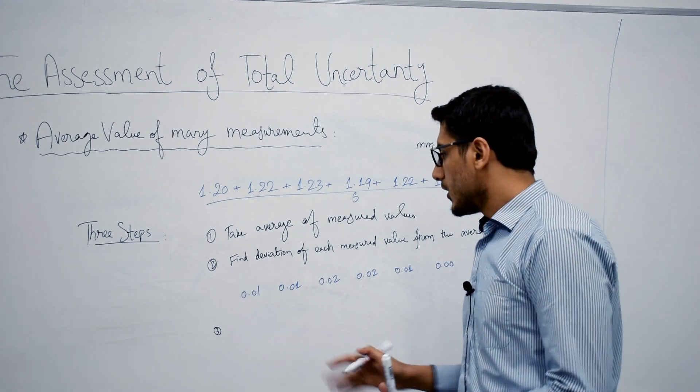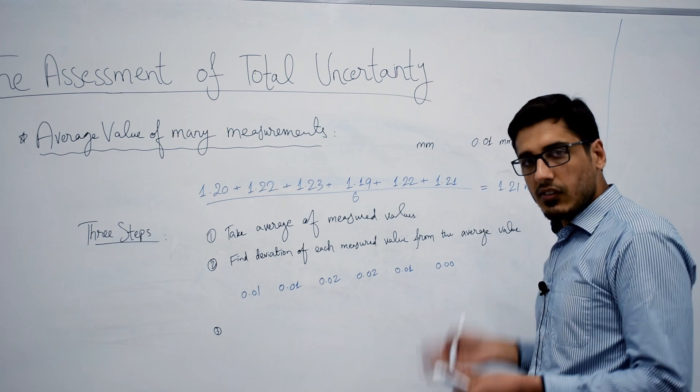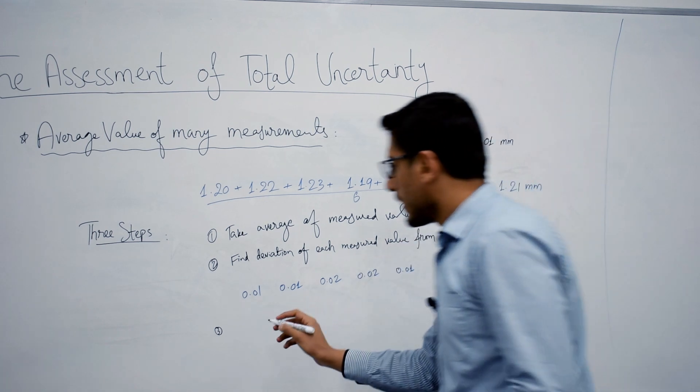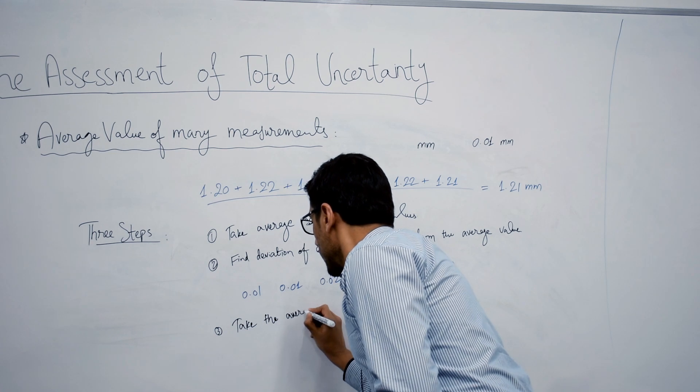Now the third step is that you need to take the average of these deviations, and the result that you get will be your uncertainty in the final result. So the third step is take the average value of all deviations.